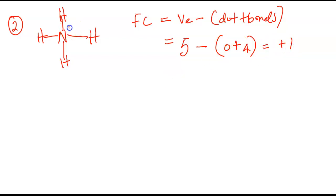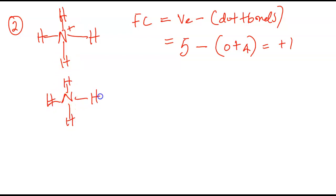So the charge on this nitrogen is plus one, and the best way to write the Lewis structure of the ammonium ion is to put the overall charge in square brackets. Let's do other problems. Doing more problems makes you competent, particularly in solving chemistry problems.